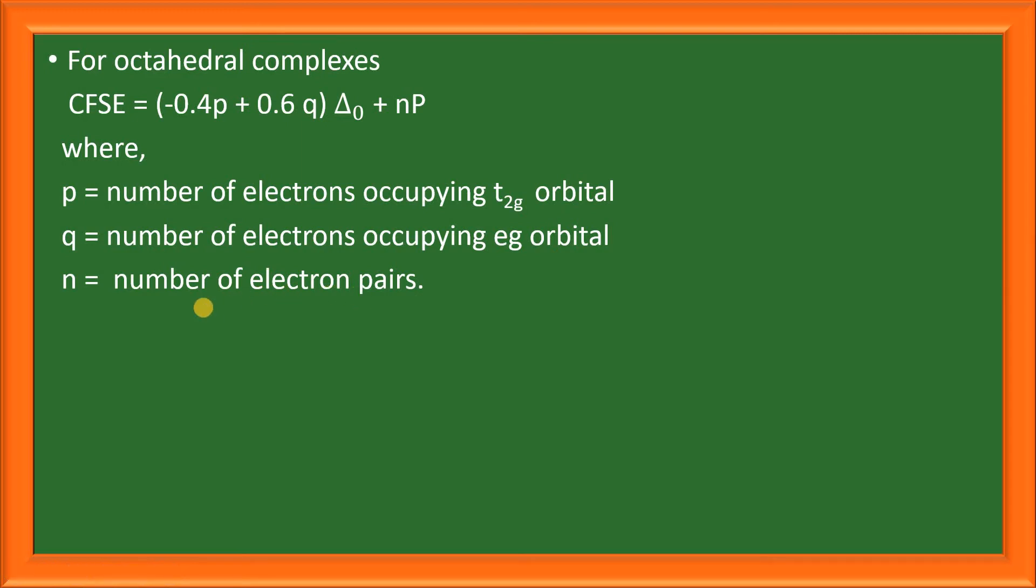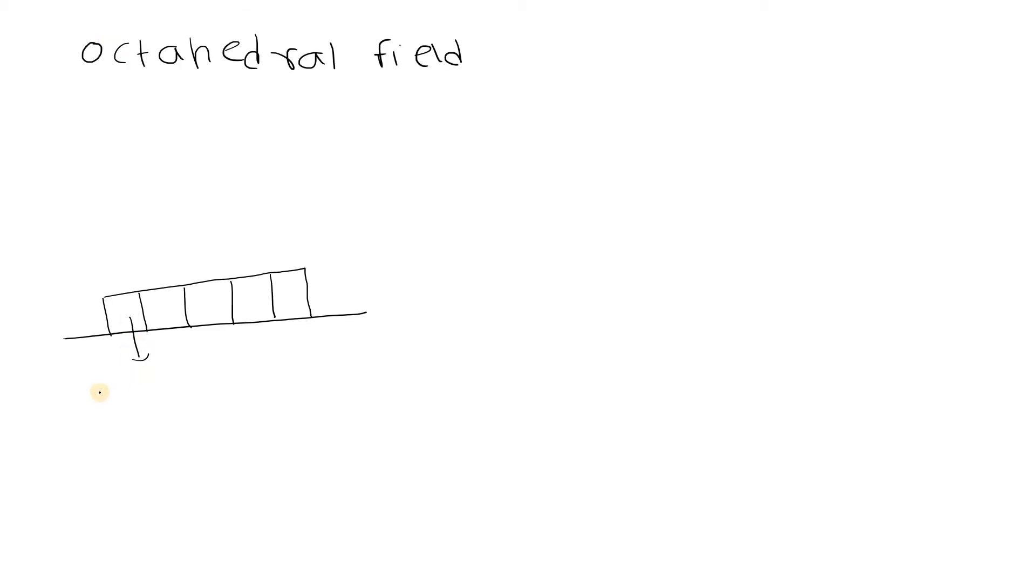Let us see how the d orbital splitting takes place in an octahedral field. In a free state, all the orbitals of the central metal atom are degenerate. As ligands approach the metal ion, repulsion between the ligand orbital and the metal d orbital takes place so that the energy of the d orbitals starts increasing. In an octahedral field, ligands approach along XYZ axis.